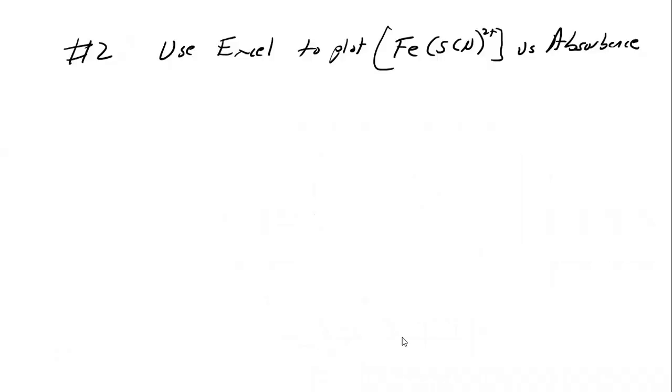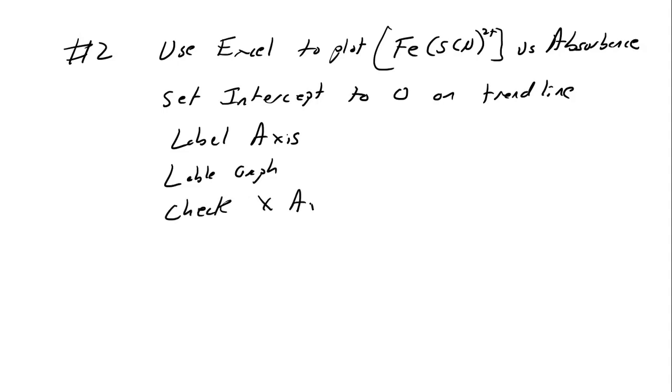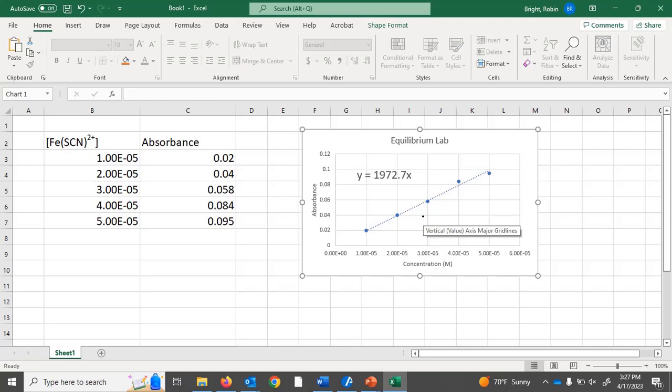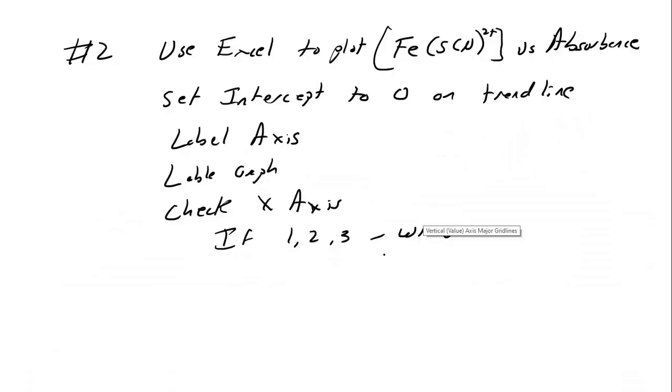So I got y is equal to 1972.7. And you need to print that out and put it into your notebook. So this is number two. So set intercept to zero on trend line. Label axis. Label graph. Check x axis. If one, two, three, it's wrong. So go back. And if you go back here, you'll see that each one of these says E to the minus 5th. If it doesn't say that, then you've put it in wrong. You've put some kind of text instead of just a number. So numbers only, no text like units.